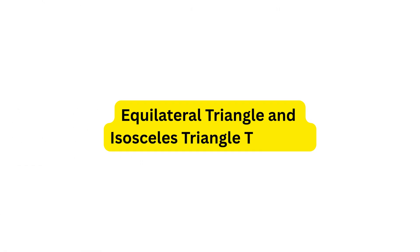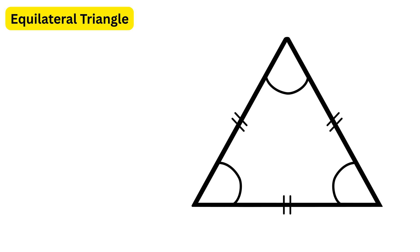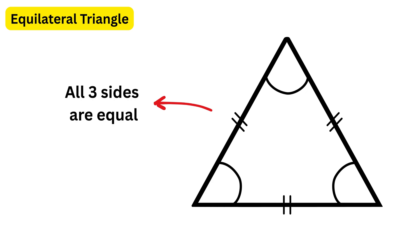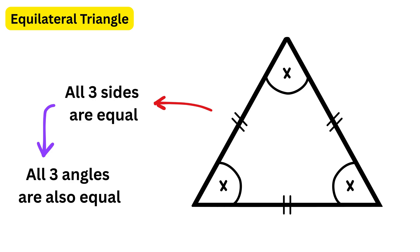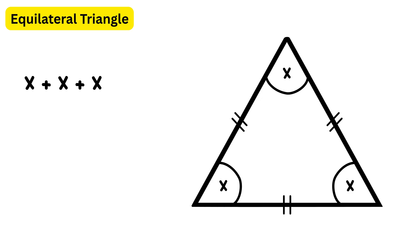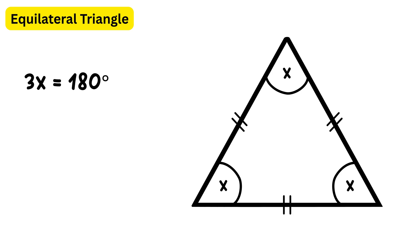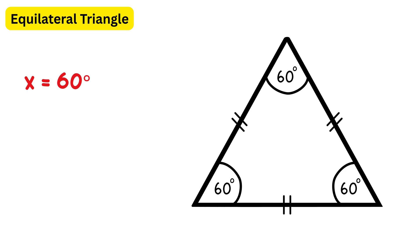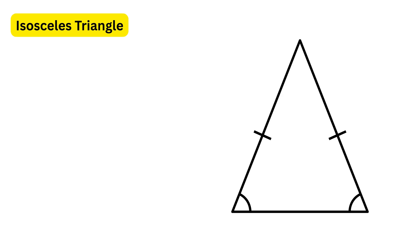The third theorem covers equilateral and isosceles triangles. An equilateral triangle has all three sides equal, so all three angles are also equal. Letting each angle be x, we get x + x + x = 180 degrees, meaning 3x = 180, so x = 60 degrees. Therefore all angles in an equilateral triangle measure 60 degrees.